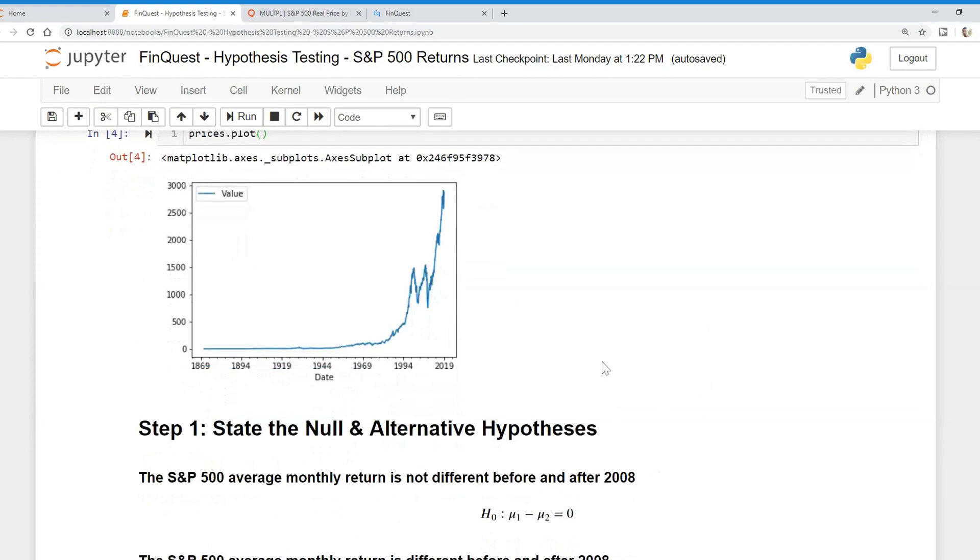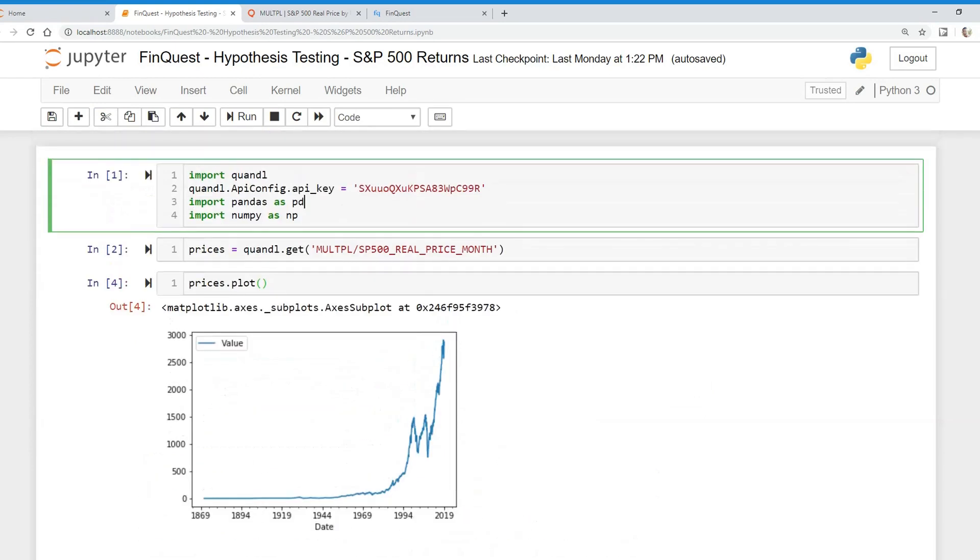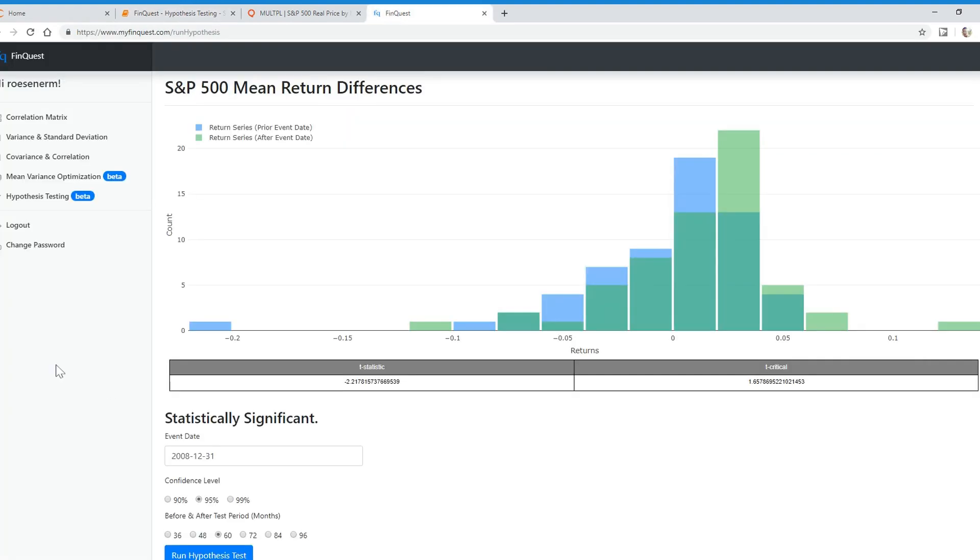In our next video, we're going to state the null and alternative hypotheses and continue understanding if there really is a difference between S&P 500 returns before 2008. If you're interested, please subscribe. If you want to check out our web app called myfinquest.com, we've built out a hypothesis testing module where you can do these tests on the S&P 500 yourself. Until next time, thank you.